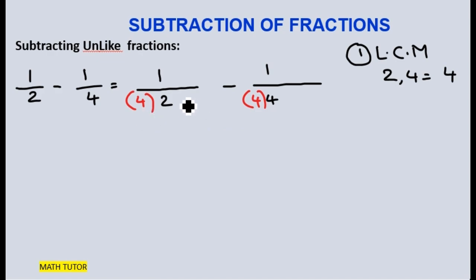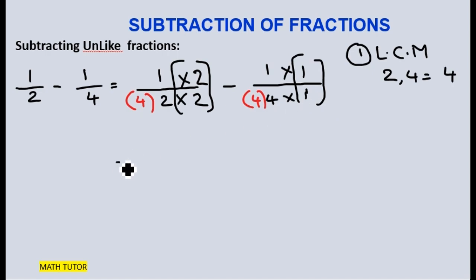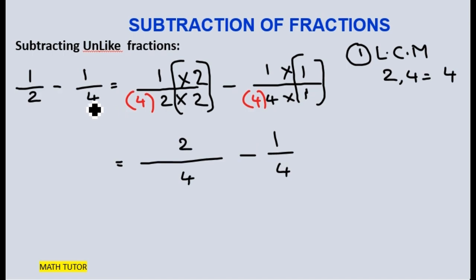My new denominator is 4. To get 4, I should multiply 2 with 2. So the same number I have to multiply with the numerator also. Coming to the second fraction, the new denominator is 4 and my original fraction's denominator is also 4, so I need not multiply — I am just keeping 1 here. Now let us multiply: 2 times 2 is 4, 1 times 2 is 2, minus the second fraction 1 by 4. We have now converted the unlike fractions into like fractions.